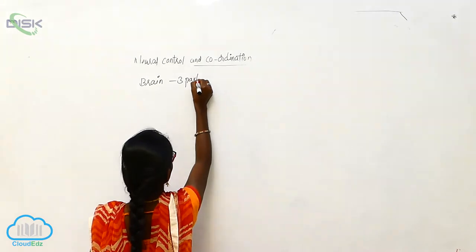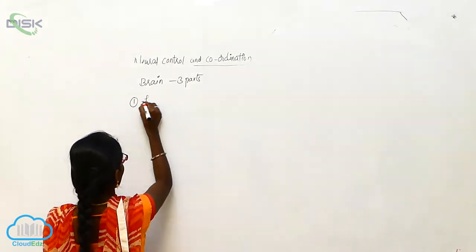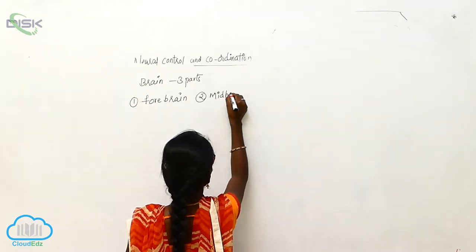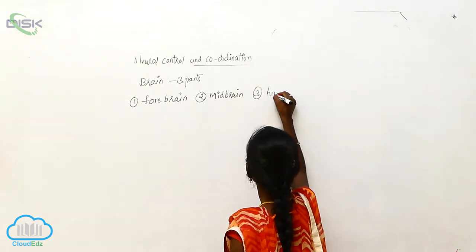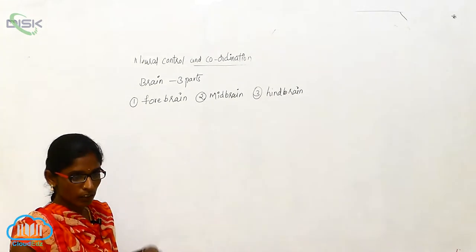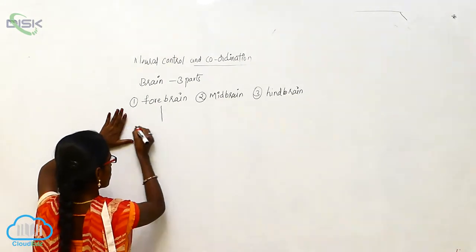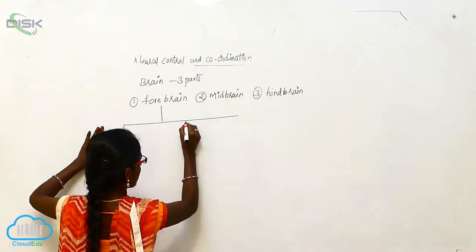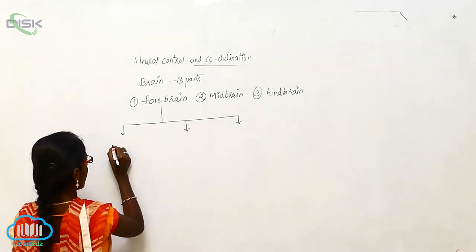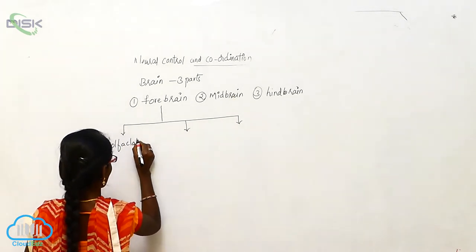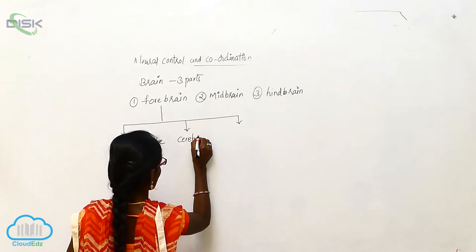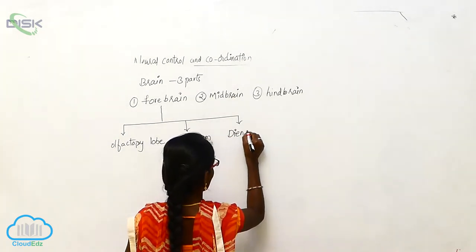The brain has three parts: the forebrain, midbrain, and hindbrain. The forebrain is again divided into three types: the olfactory lobe, cerebrum, and diencephalon.